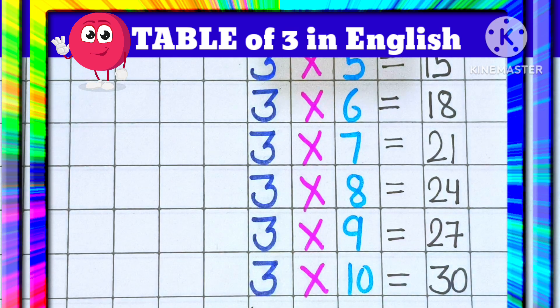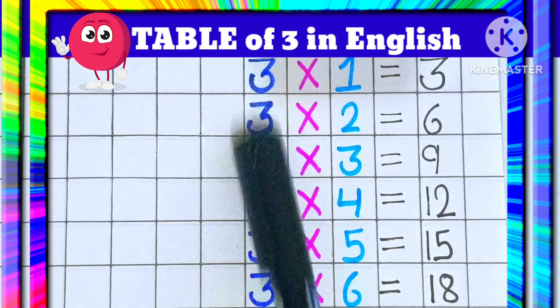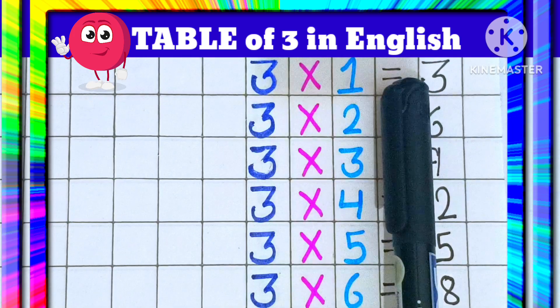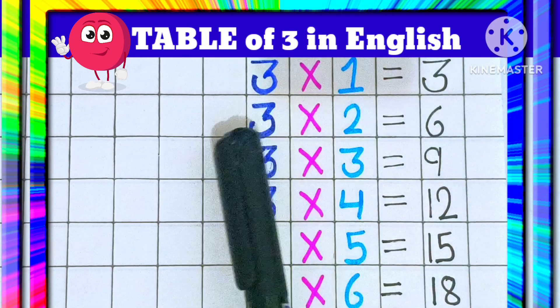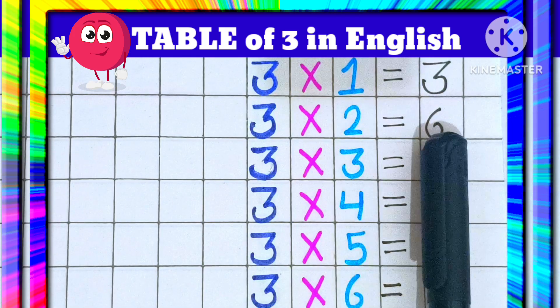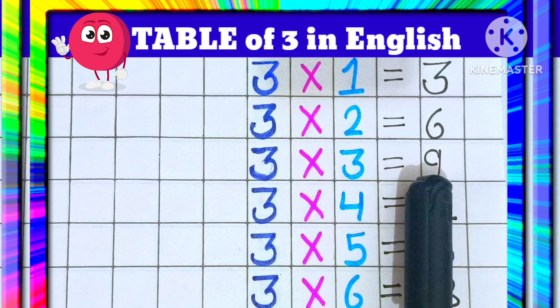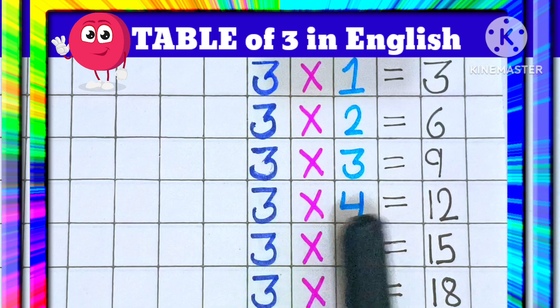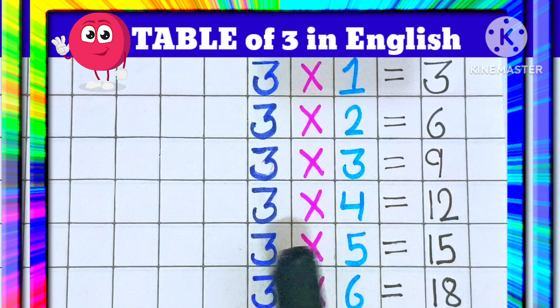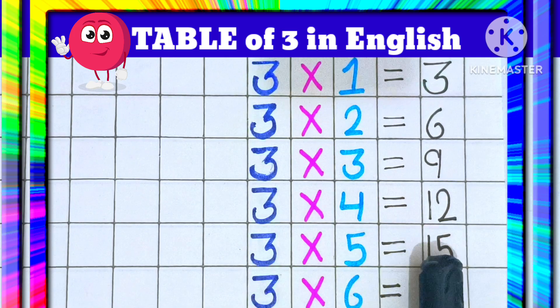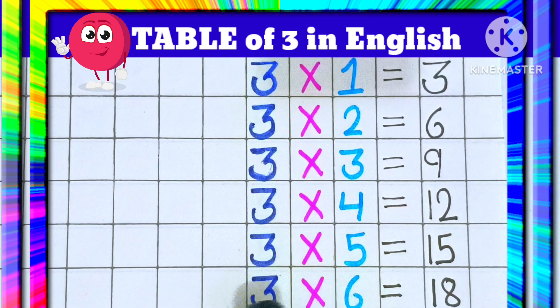Table ko repeat karengi. 3 1's are 3. 3 2's are 6. 3 3's are 9. 3 4's are 12. 3 5's are 15.